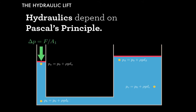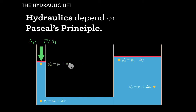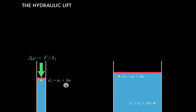What Pascal's principle says is that if we increase the pressure here by pressing on our piston with a force, then the pressure changes everywhere in the fluid. So the new pressure at A is the air pressure plus delta P — that's the new surface pressure altogether — plus the density of the fluid times G times the depth at A. We can repeat this at B, C, and D. The new pressure at A is just the old P_A plus delta P, and the same goes for B, C, and D.